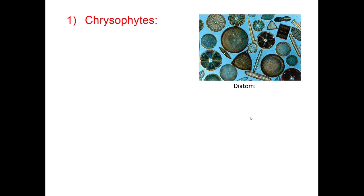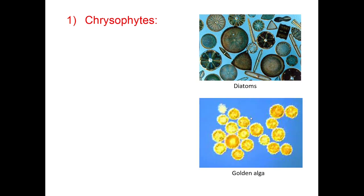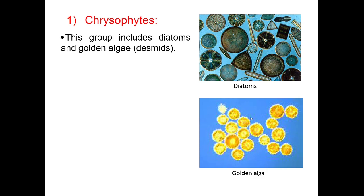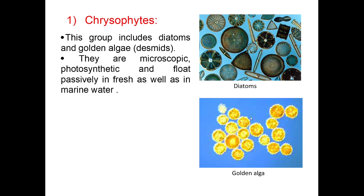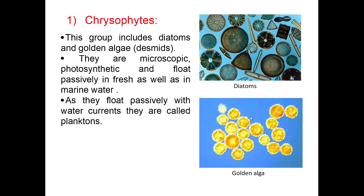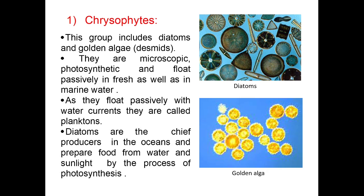Chrysophites include diatoms and golden algae, also known as desmids. They are microscopic, photosynthetic, and float passively in fresh as well as marine water. As they float passively with water currents, they are called planktons.